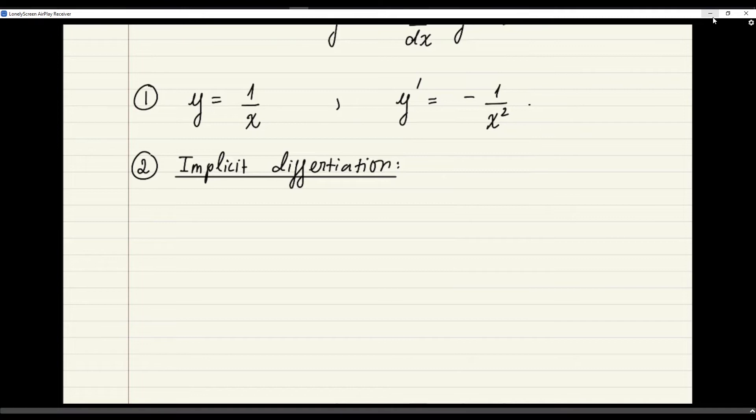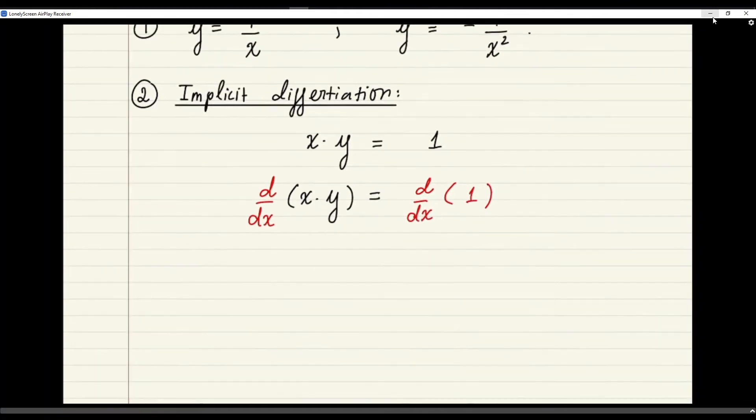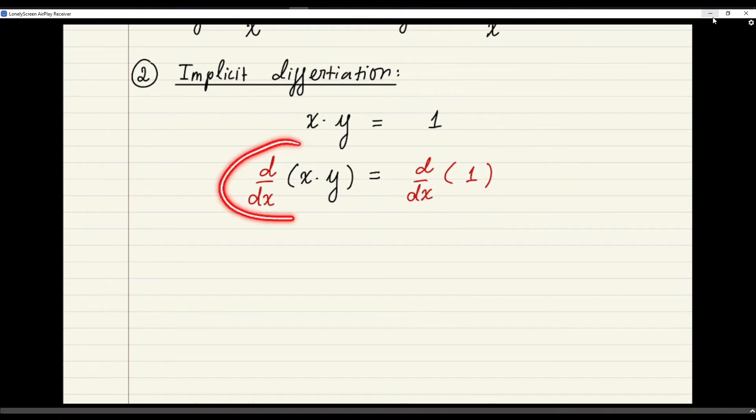In this method, we have x times y equals 1. The first step here is that we want to differentiate both sides of this equation. So I will take d dx of x times y and I set that equal to d dx of 1. Well, we see that on the left hand side, we have the derivative of a product of two things. So we have to use the product rule in this case.